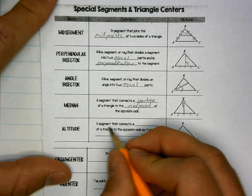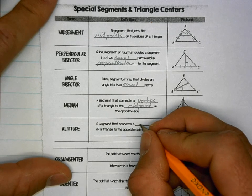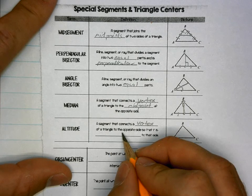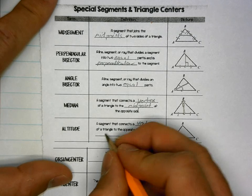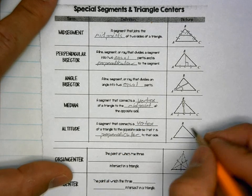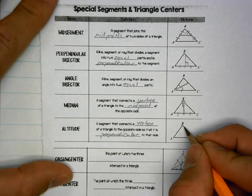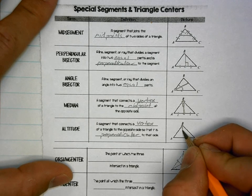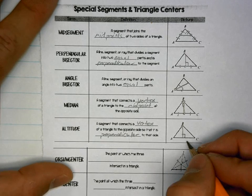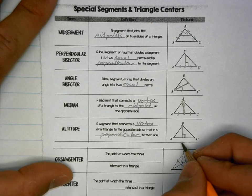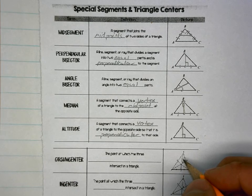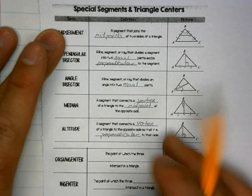Altitude: a segment that connects a vertex of a triangle to the opposite side so that it is perpendicular to that side. Starting at B, I draw straight down to get a line that is perpendicular — it doesn't cut the side in half, just perpendicular. The altitude is also the height of the triangle.